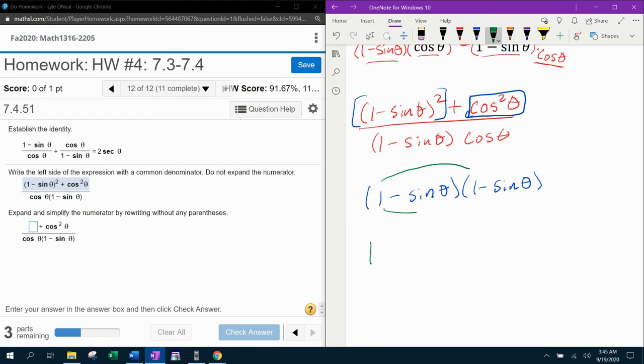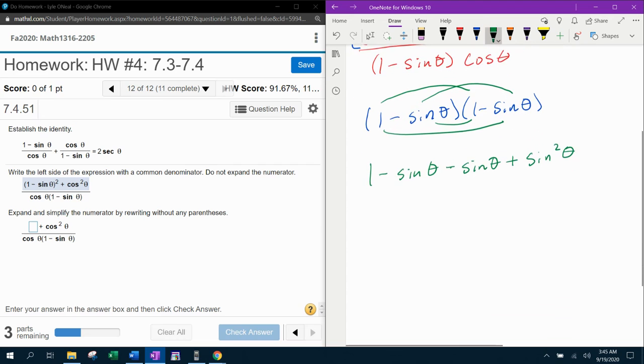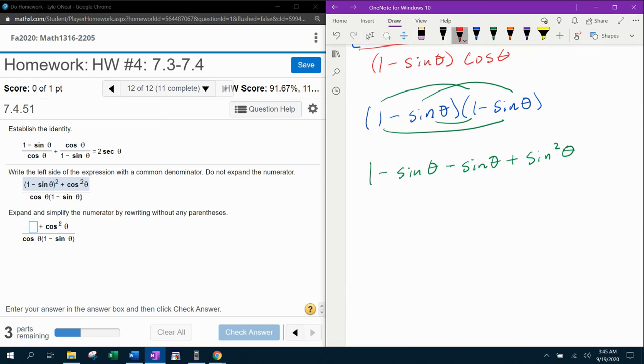Here we go. So first, one times one is one. On the outside, negative sine theta. On the inside, another negative sine theta. And last but not least, we've got a negative times a negative makes a positive. Sine theta times sine theta is sine squared theta.